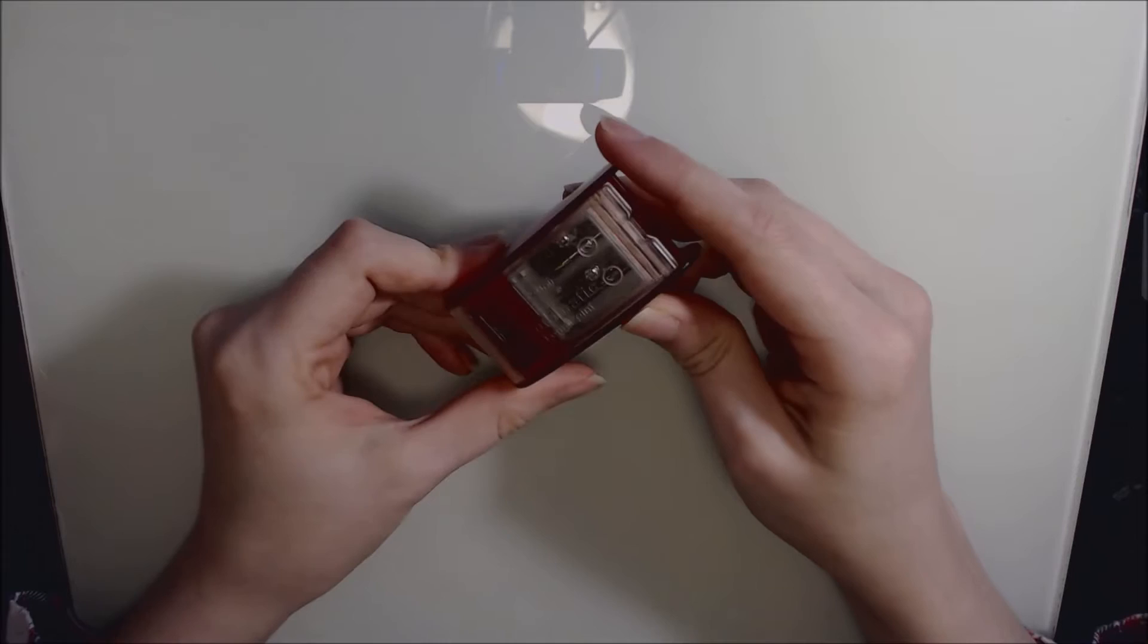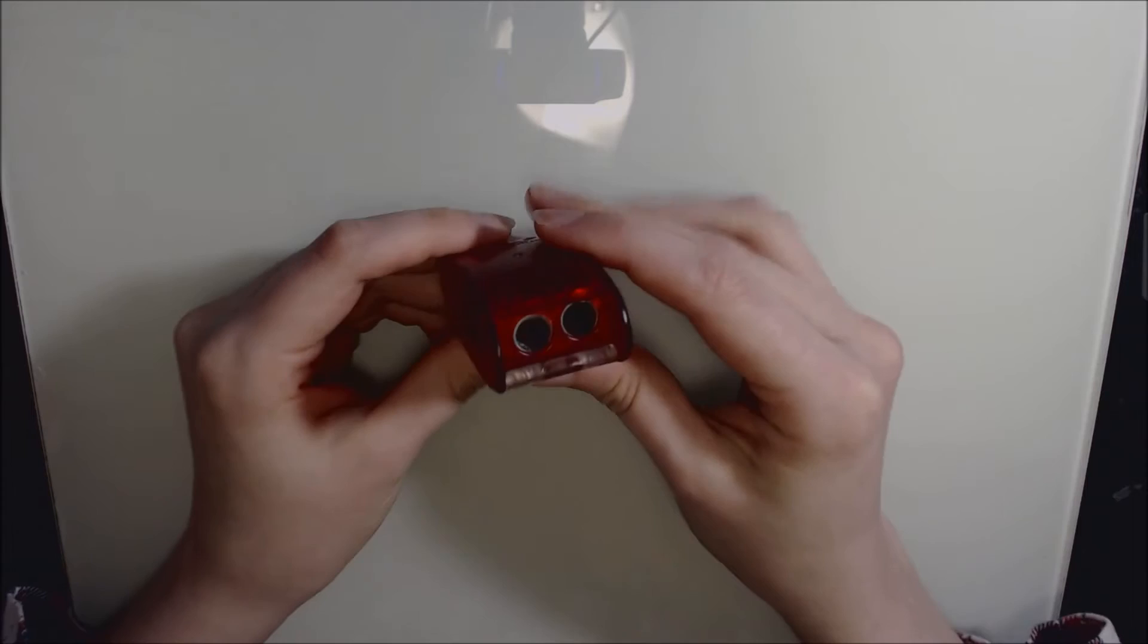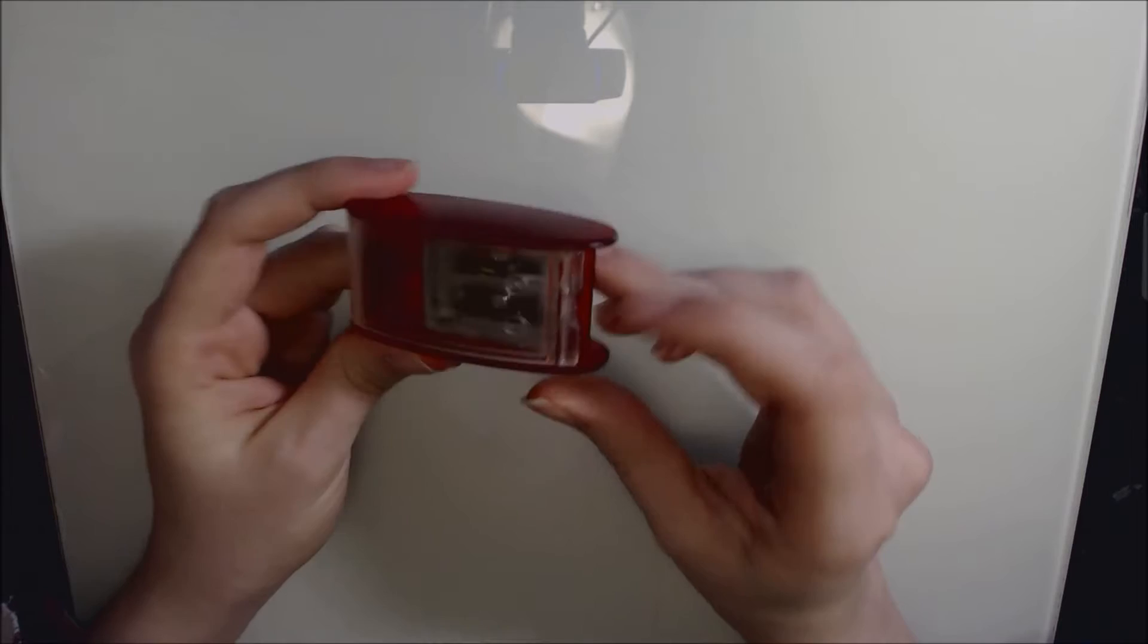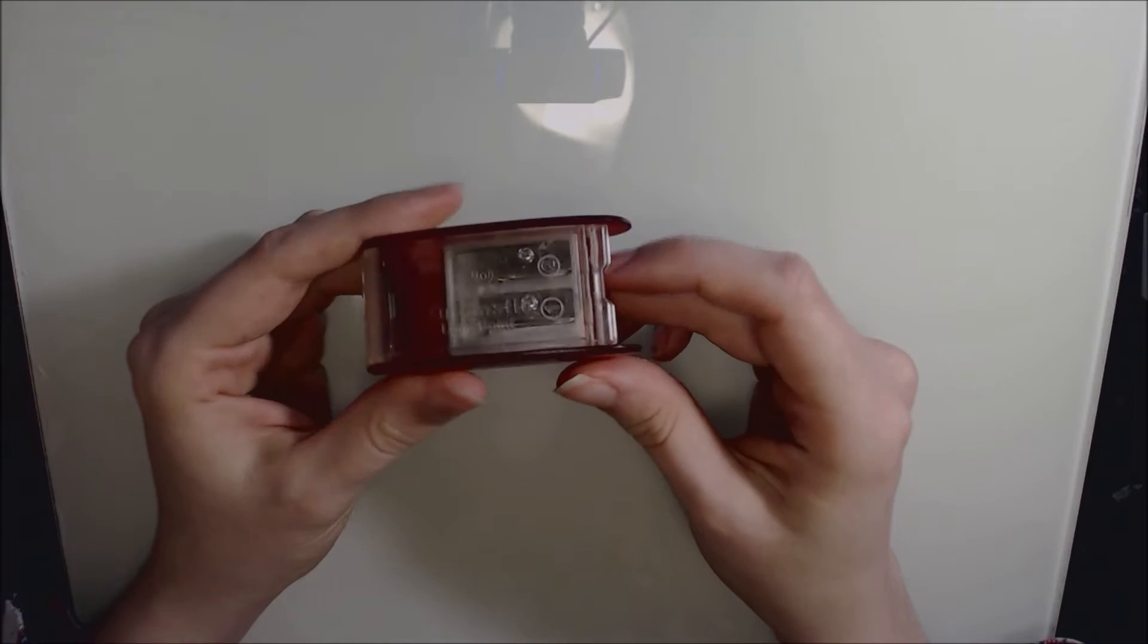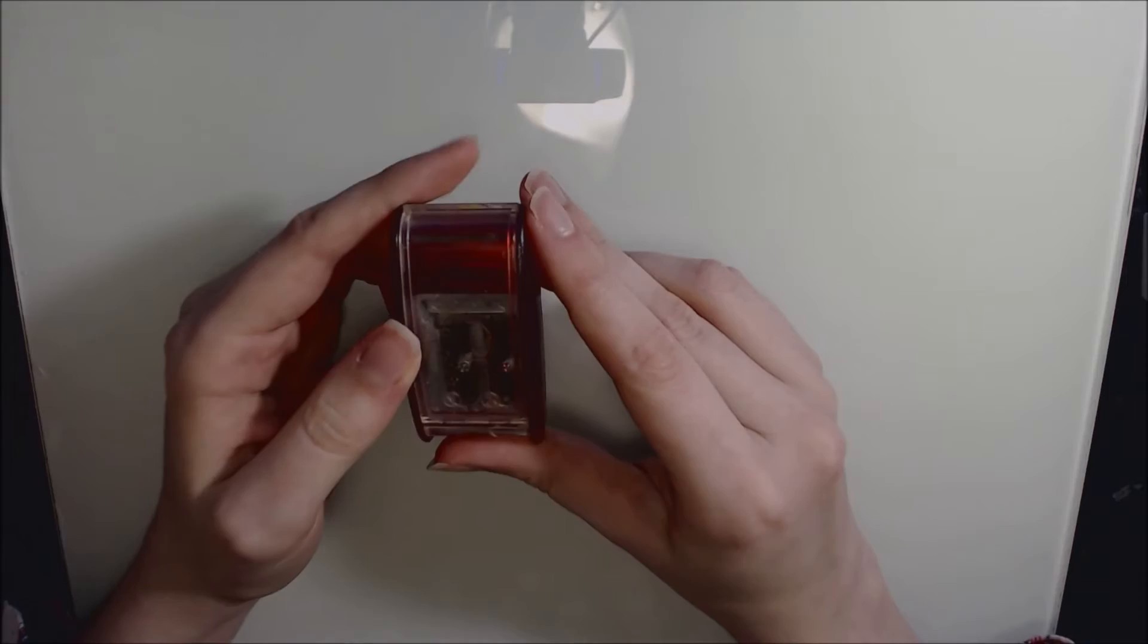On to the last couple of items now. This is the KUM automatic long point sharpener. It has two holes. You put your pencil in the first hole and that cuts down the wood portion of the pencil, and the second hole sharpens the lead portion. And it creates a really long, fine point on your pencil. Let me show you.